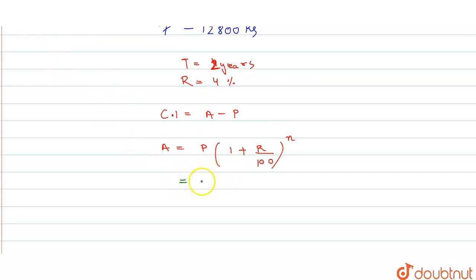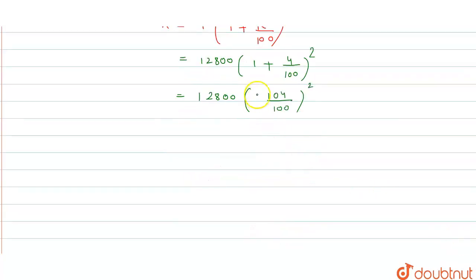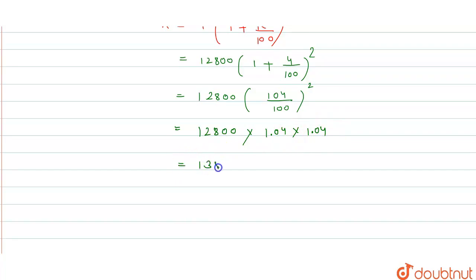Values substitute करते हैं। Principal = 12,800, Rate = 4%, n = 2 years। तो Amount = 12,800 × (1 + 4/100)² = 12,800 × (104/100)² = 12,800 × 1.04². यह हो जाएगा 12,800 × 1.04 × 1.04, जिसका product है 13,844.48।